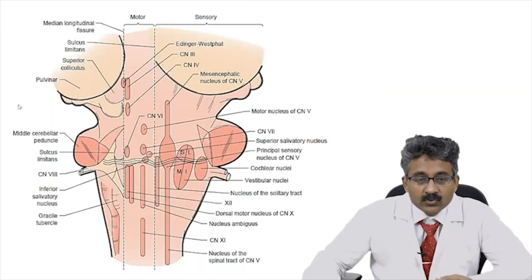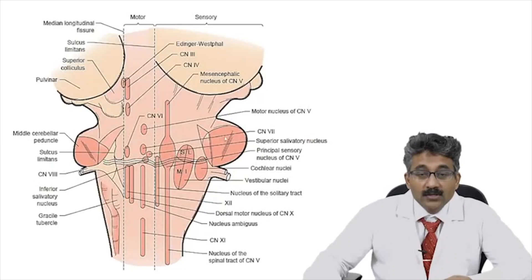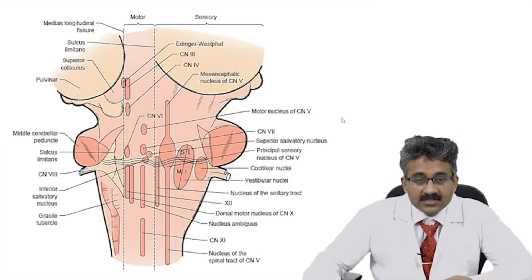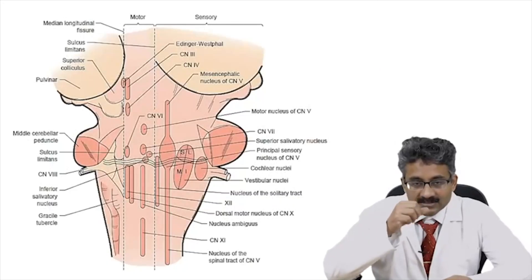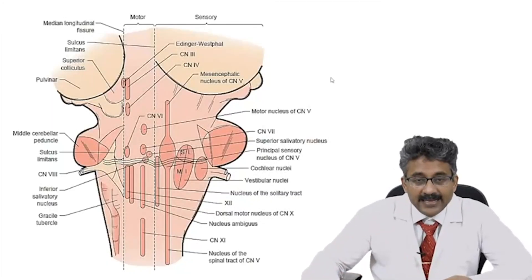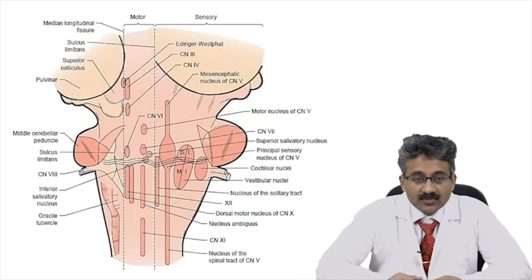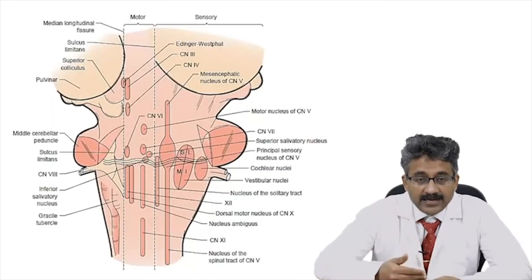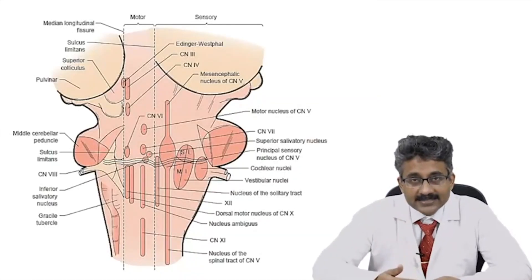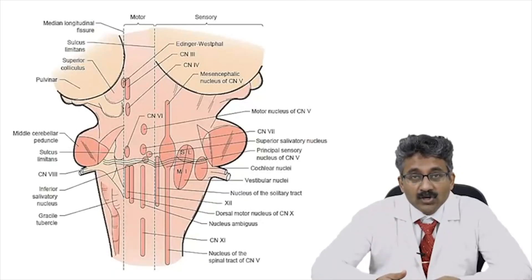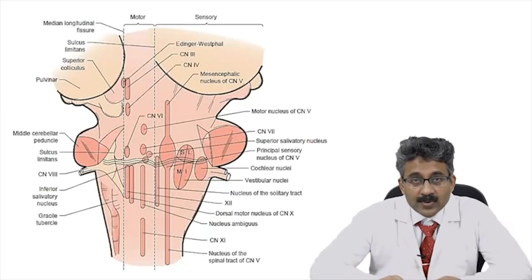There is one more Rule of Four in brainstem anatomy: there are four structures which are medial in the brainstem and four structures which are lateral. The four medial structures: the posterior column medial lemniscus, which carries fine touch and vibration sensation; the corticospinal tract, which is medially situated; the medial longitudinal fasciculus (MLF); and the motor nuclei of the cranial nerves, which are medially situated. So: four M's — medial lemniscus, motor pathway (corticospinal tract), medial longitudinal fasciculus, and motor nuclei.